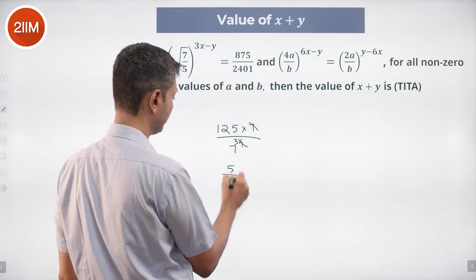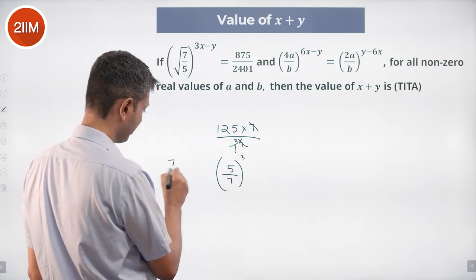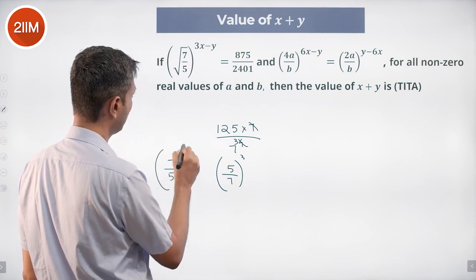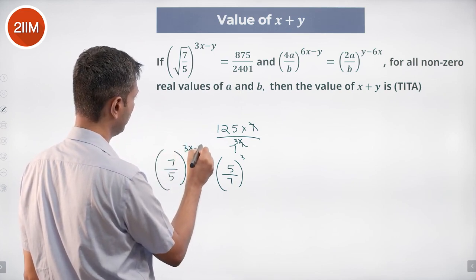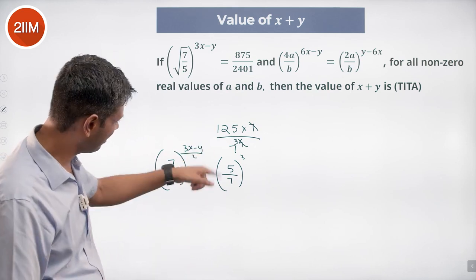Or this is 5 by 7 whole cube is equal to 7 by 5 whole power 3x minus y by 2 square root of 7 by 5. This is 5 by 7 whole cube. This is 7 by 5 power this.